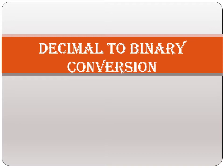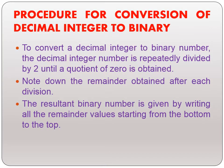Before doing so, let us have a brief introduction of what is a decimal number and what is a binary number. In decimal numbers we have 10 values from 0 to 9, and the base value is 10. In binary numbers we have just 2 values, which are 0 and 1, so their base value is 2. Basically, here we will convert a base 10 number to a base 2 number.